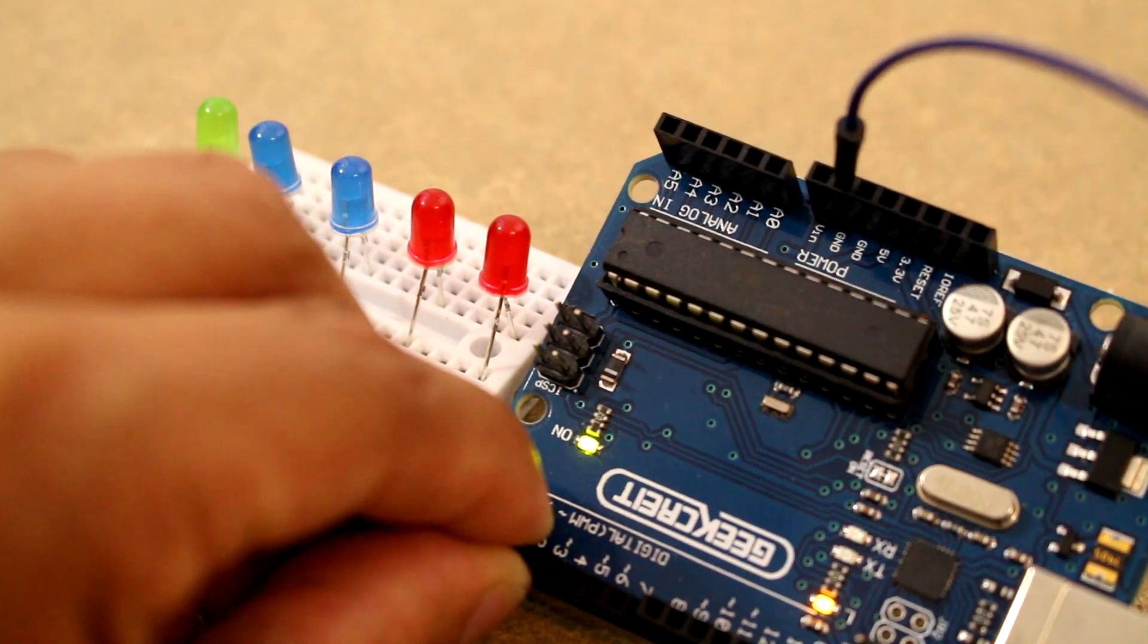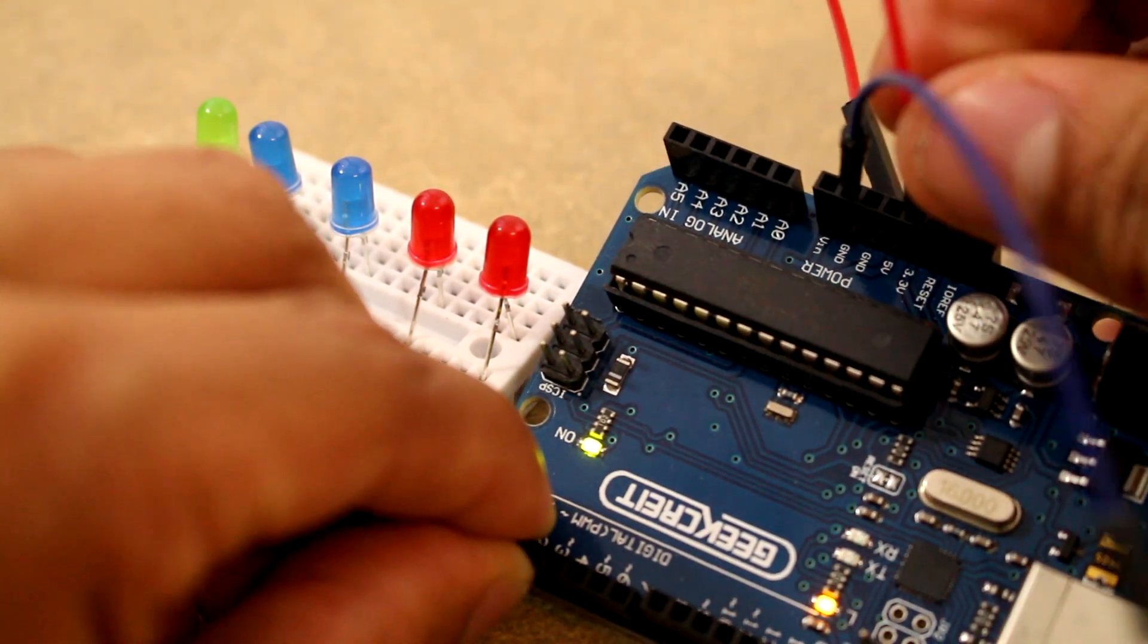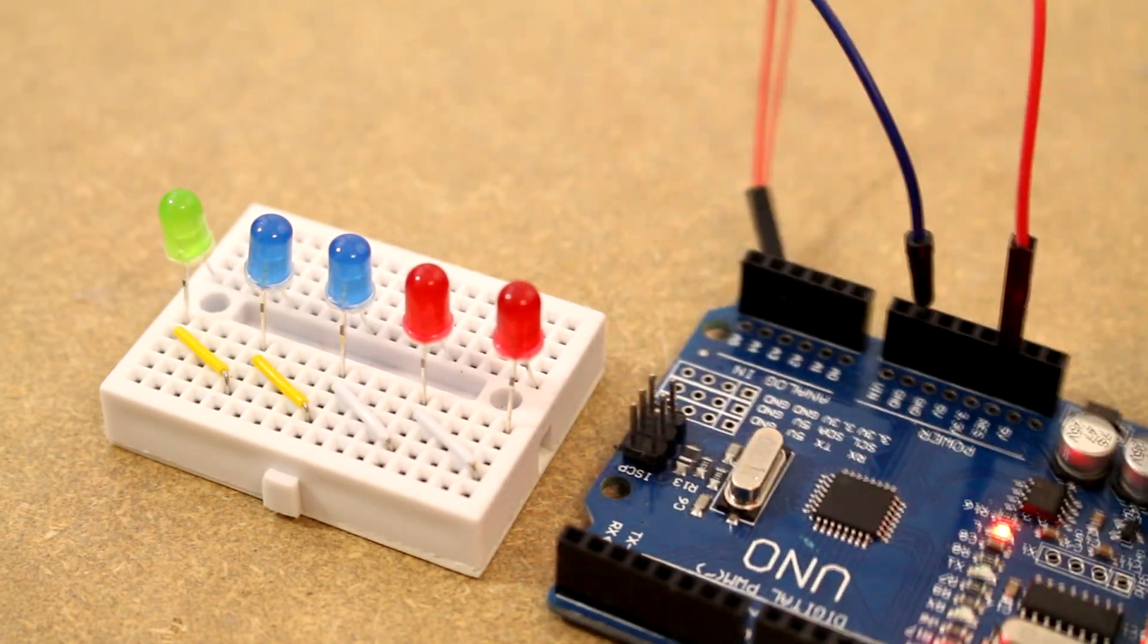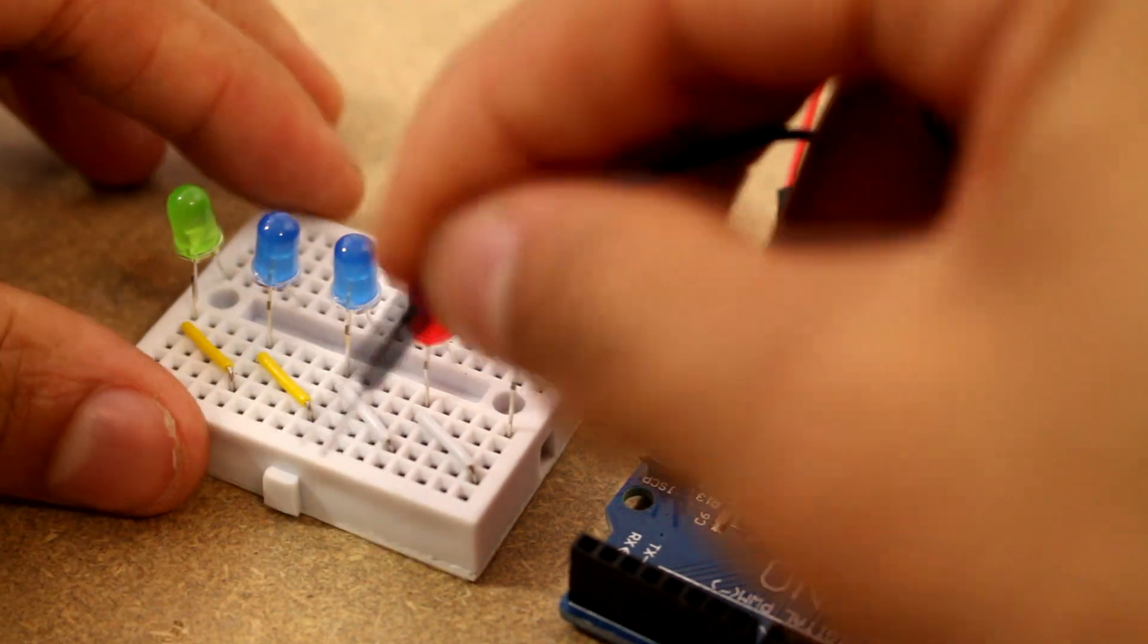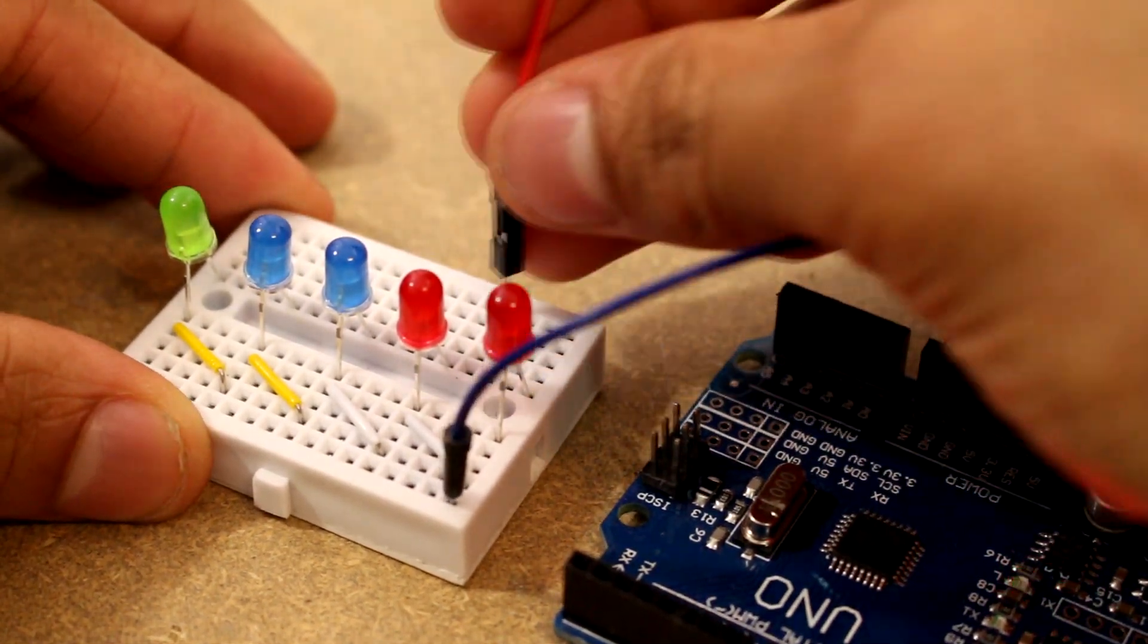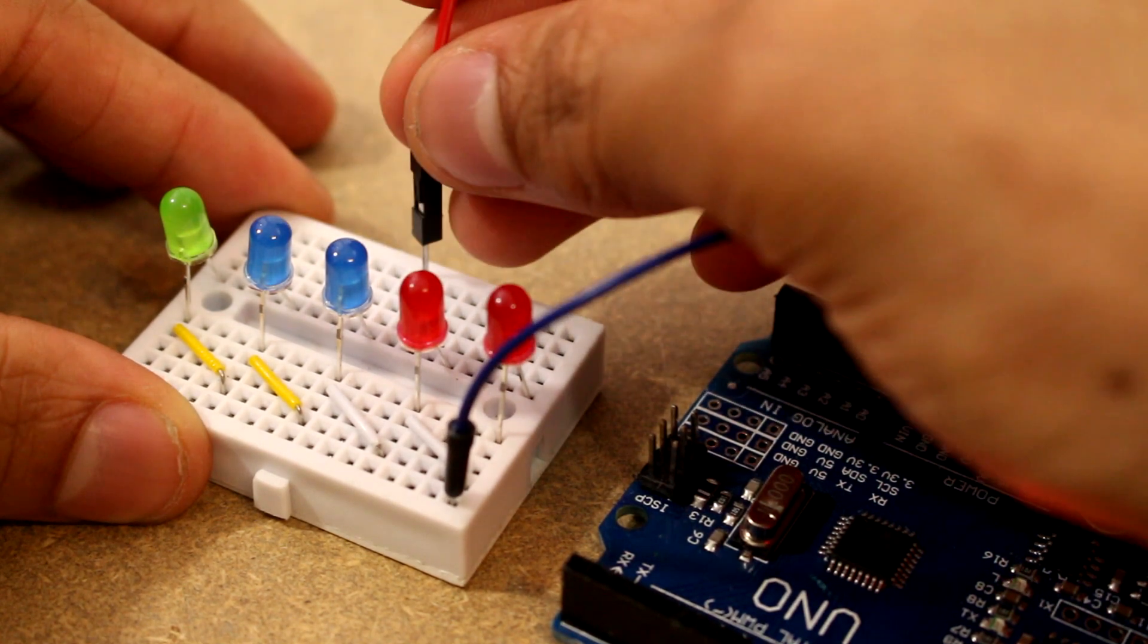So next we're just going to test out the LEDs. I'm going to connect the ground side of my Arduino to the ground of the LEDs. And then I'll connect the five volt side to each LED just to make sure they all work.